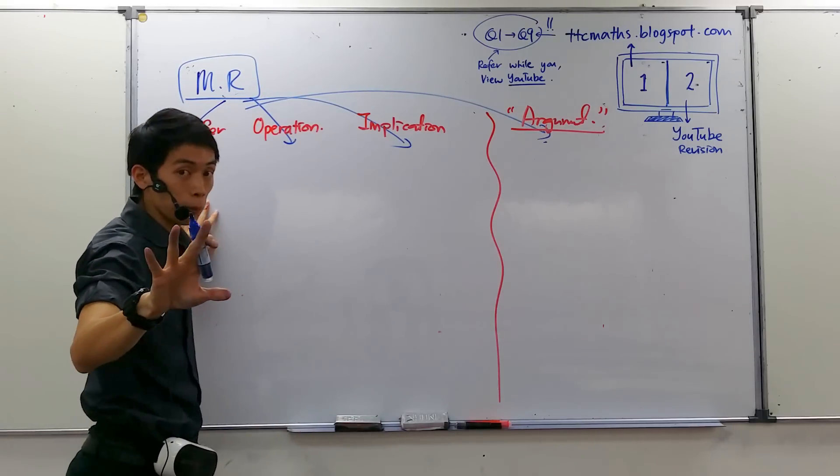So what happens is, to make it a true statement — based on common sense, you know the answer. If you put 'all,' is it possible? No. Penguins can't fly, ostriches can't fly. So what you do is put 'some.' If you put 'some birds can fly,' it becomes a true statement.